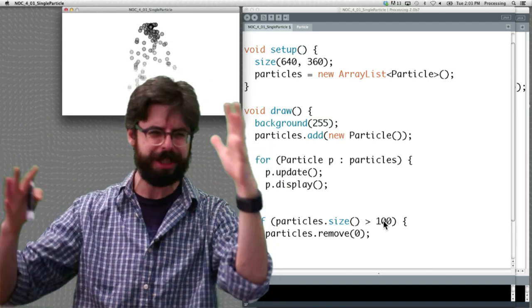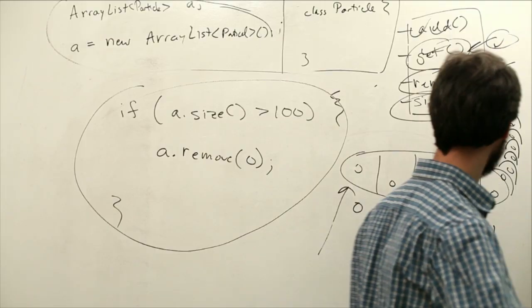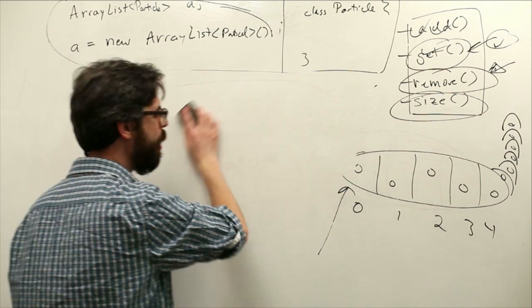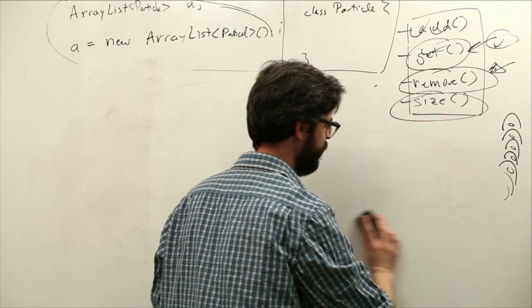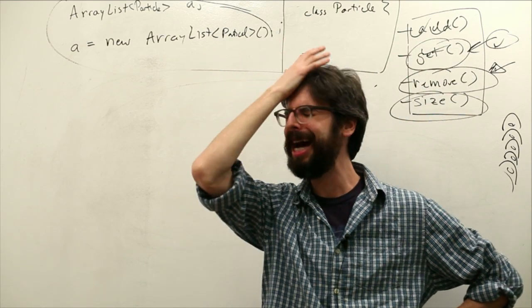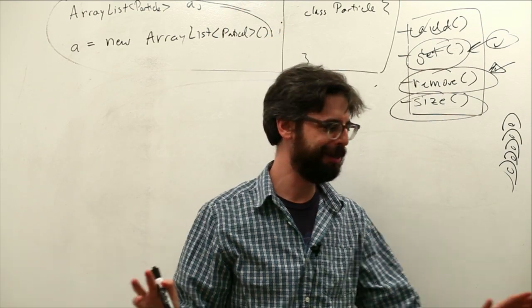We want to make this a little bit more advanced. We want to figure out when a particle is finished, let's remove it. So we need to talk about this a little bit and then we're going to add that code to this example. Let's figure out how we're going to do that.